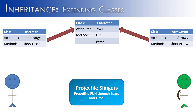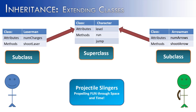To link them, through inheritance we create an 'is a' relationship. Arrow Man is a character, and Laser Man is a character. Laser Man and Arrow Man would both be subclasses, and Character would be the superclass.